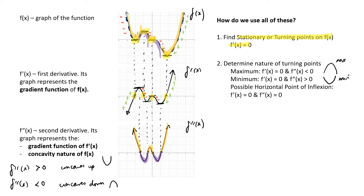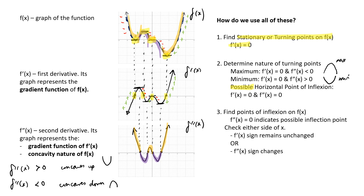Now when f dash x is zero and f double dash x is equal to zero, this is only a possible point of inflection — you're not guaranteed to get a point of inflection. We can also use f double dash x equal to zero to find possible inflection points, but in order to make sure it is a point of inflection, we need to do some further checking. We need to make sure that f dash x sign remains unchanged on either side of x, or we can check that f double dash x sign changes to indicate a change in concavity. Because the point of inflection is where the concavity on the curve changes.